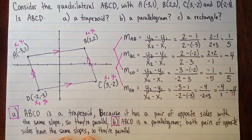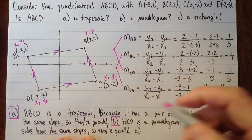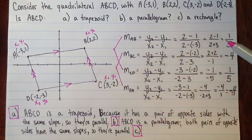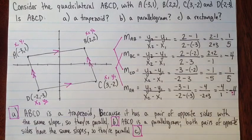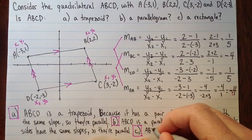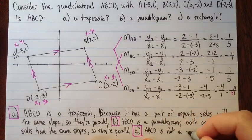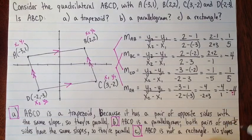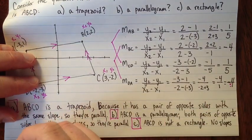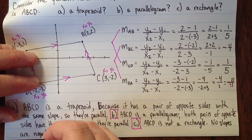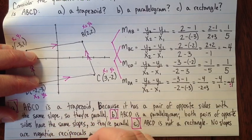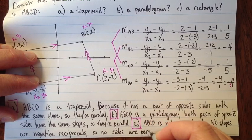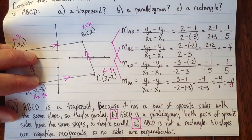Part C asked us, is it a rectangle? It's not a rectangle because we don't have any perpendicular sides. The way we know we don't have perpendicular sides is that we don't have any slopes that are negative reciprocals of each other, so no sides are perpendicular.